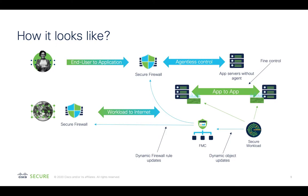Secure Firewall integration allows dynamic updates to firewall rules — for example, for internet as well as end-user traffic. It also provides this same internet and end-user firewall protection and inspection for workloads running where the Secure Workload agent is not available or is not possible to install. In this diagram, the communications protected by Secure Firewall are shown in blue — for example, the agentless control — and the ones protected by Secure Workload are in green, for example, application-to-application. The end-user-to-application and workload-to-internet paths are shown in both green and blue, indicating coverage for workloads with and without the Secure Workload agent.